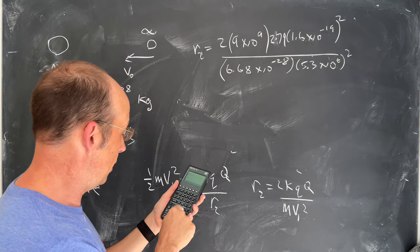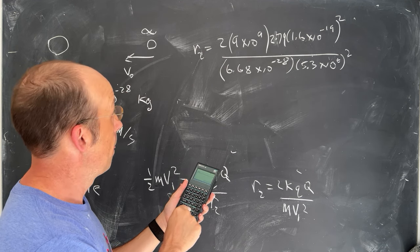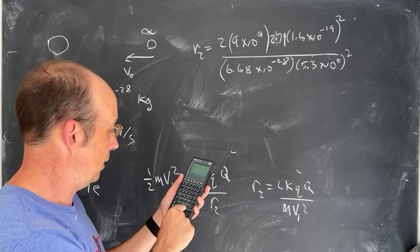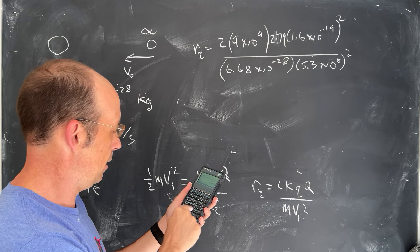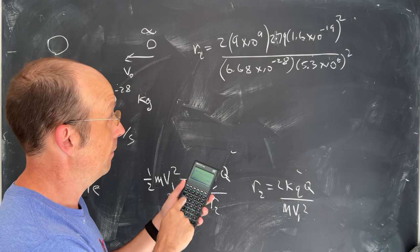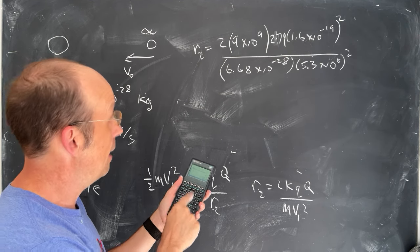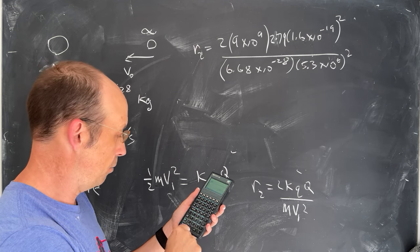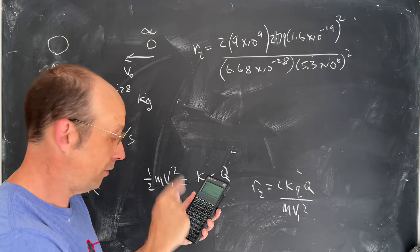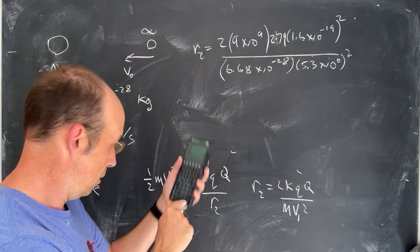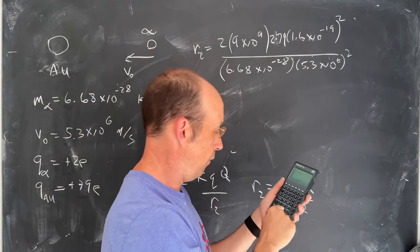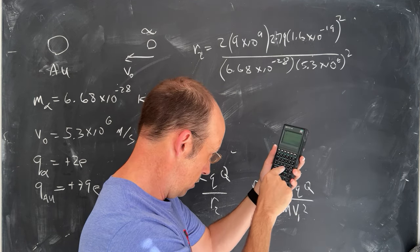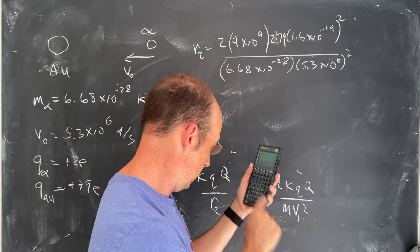2, enter. 9 times 10 to the 9th. Now I'm using that scientific notation button. 2 times 79 times. Now I'm going to enter the 1.6. 1.6 times 10 to the negative 19th. Enter. And then I'm going to square it. Now I'm going to multiply. Okay, so I've done this whole top thing right here. Now I'm going to divide by this, which is pretty easy. 6.68 times 10—now, because I'm using scientific notation—negative 28 divided by. Now I'm going to enter this number. 5.3 times 10 to the 6th. Enter. And I'm going to square it. And then I'm going to divide.